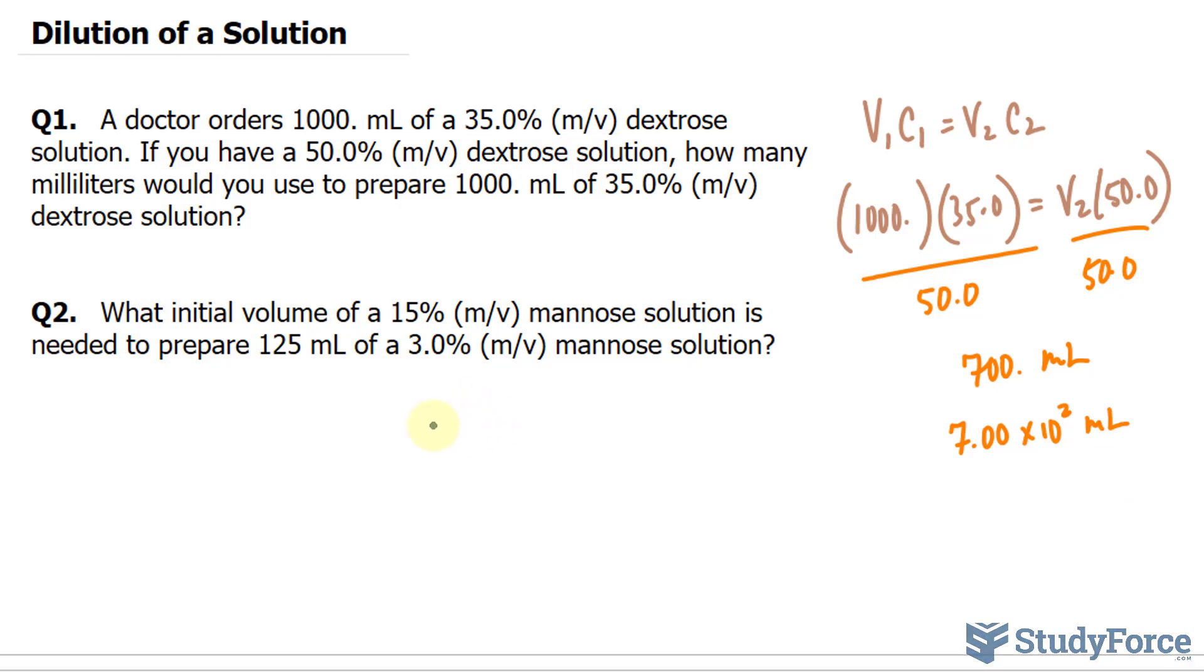We'll be using the same formula as before. This time, the initial concentration, V1, is 15%. We don't know the volume, that's what we're looking for, is equal to 125 times 3.0.